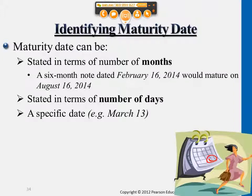If it's based on months, you don't change the specific date — the 30th — you just change the number of months. So if it's September 30, 2014, and it's a three-month note, then it will be due December 30th. You don't change the specific date; you just roll over the number of months.